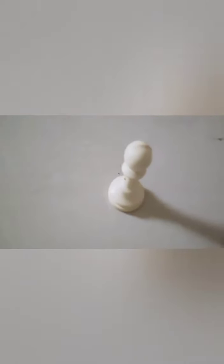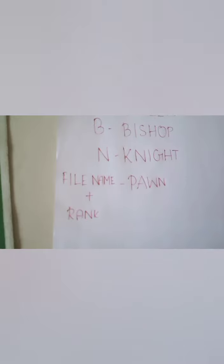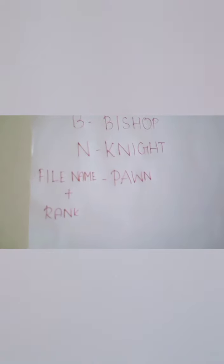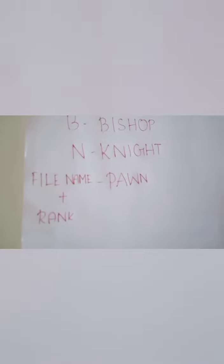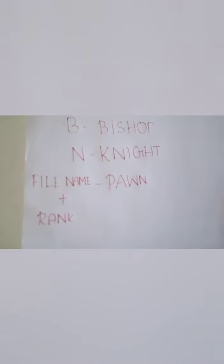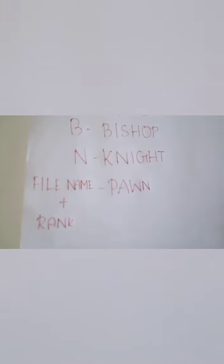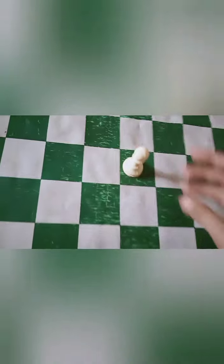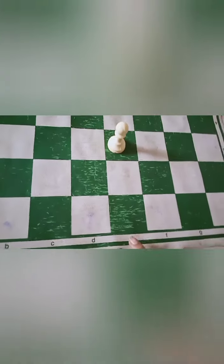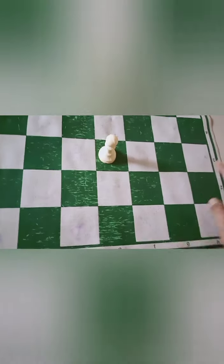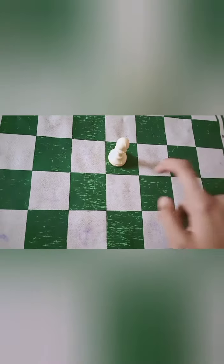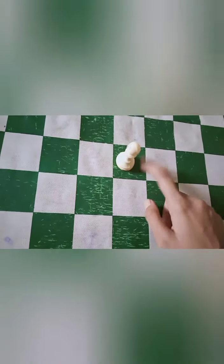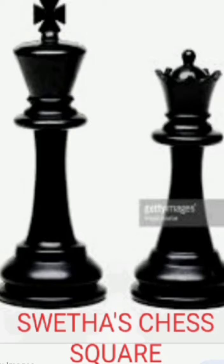And last we are going to the pawn. There is no separate notation for pawn — file name plus rank. We will place our pawn here. File name E, rank 3. So here E3. Please do subscribe and support.